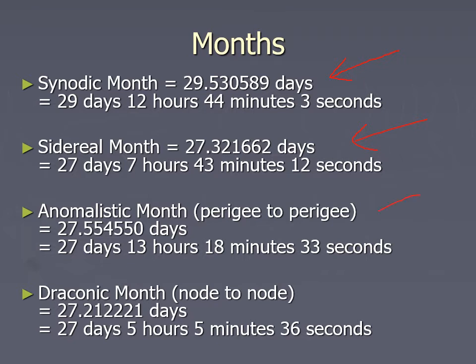The anomalistic month is how long it takes to get from perigee to perigee. The apsides precess just like they do on Earth, and so the exact spot in the moon's orbit where it reaches perigee shifts.